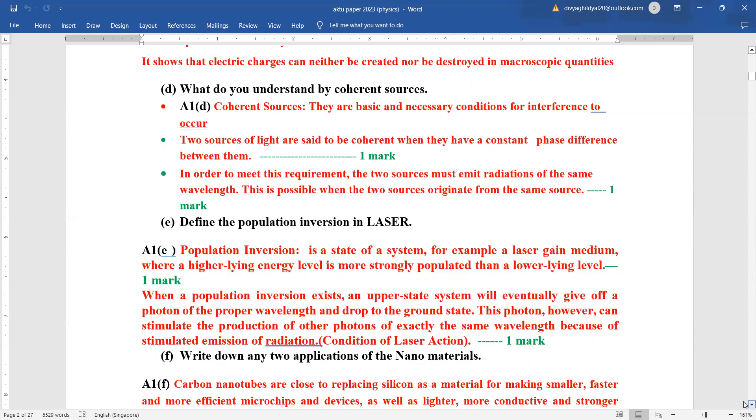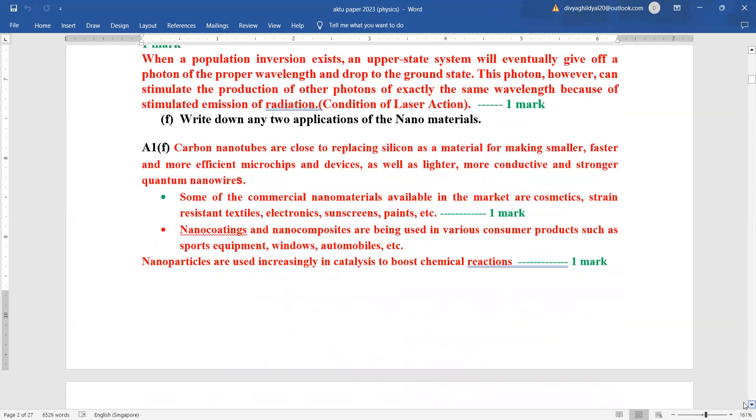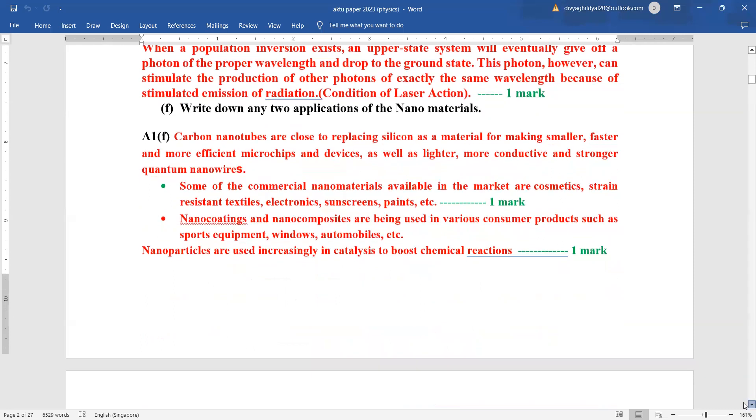Population inversion in laser. Laser action is achieved when number of atoms in the excited state is greater than that in the ground state. This is known as population inversion, one necessary condition for laser action. Applications of nanomaterial: you can write anything you are comfortable with, like nanoparticles are used as catalysts in boosting chemical reactions, nano coatings in consumer products, or nanotubes replacing the usual silicon tubes.